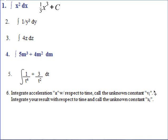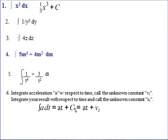Here's a challenge: integrate acceleration with respect to time and call the unknown constant v-sub-i. You integrate a with respect to time — a is a constant, so it's t to the zero — giving a·t plus the constant of integration, which we call v-sub-i. If you take the derivative of a·t, do you not get a? Yes. And there you have it: v-final equals v-initial plus acceleration times time. So cool.